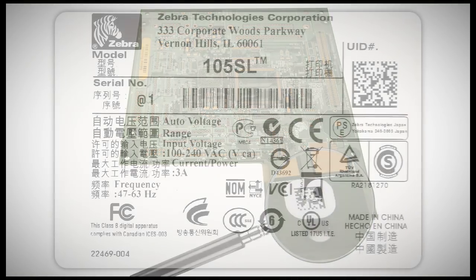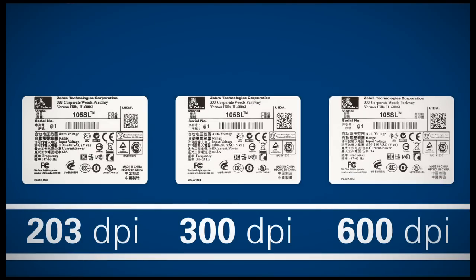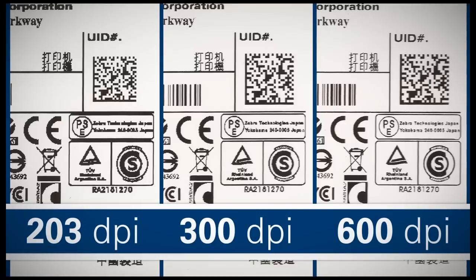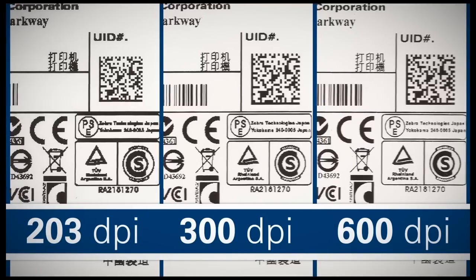Also, text, barcodes, graphics, and photos are very important to consider. Printing text and regulatory symbols with a font size 6 and under requires a 600 dpi printer so that the text is readable and the regulatory symbols are identifiable.